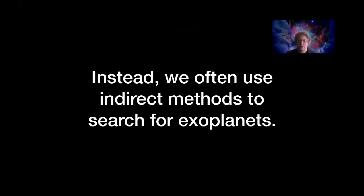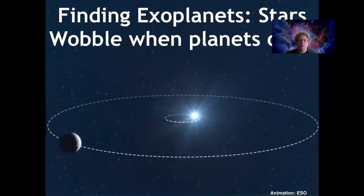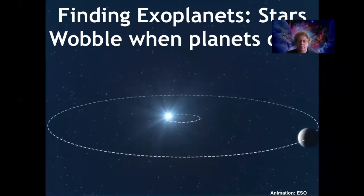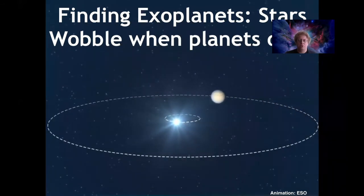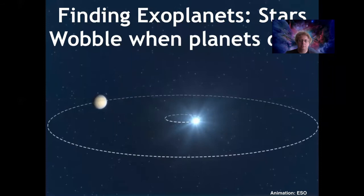So instead, when we look for exoplanets, the most effective methods that we have right now are indirect. Instead of looking to take images of the planets themselves, we look for the effects of planets on the stars that they orbit. One prominent way historically has been to look for a small wobble of a star as a planet orbits around it.